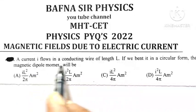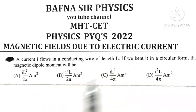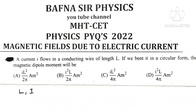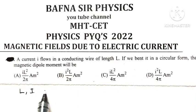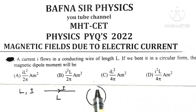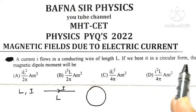A current I flows in a conducting wire of length L. L is the length of conducting wire and I is the current flowing through it. Now if we bend it into a circular form, that straight wire of length L which carries current I is bent into a circular form.